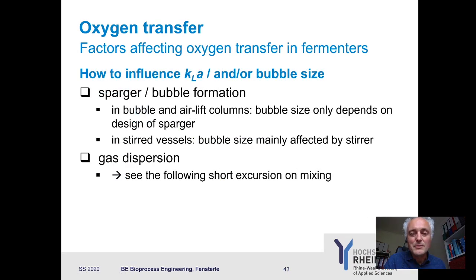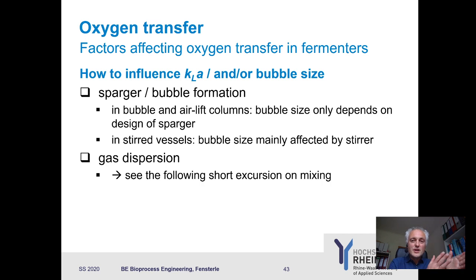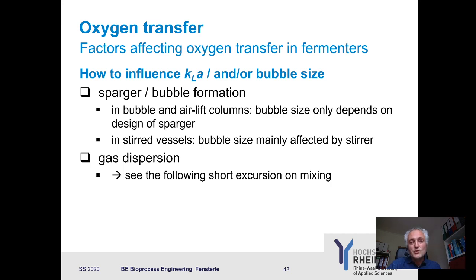How can you influence KLA and bubble size? You sparge gas into the bioreactor and disperse it using the sparger and the stirrer — both influence bubble size. In an airlift or bubble column bioreactor, the only option is the sparger design. In stirred vessels, you have both, but in reality the main influence on bubble size comes from the stirrer. This makes mixing an important topic to examine.